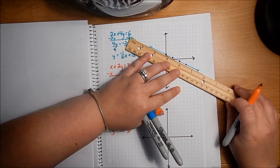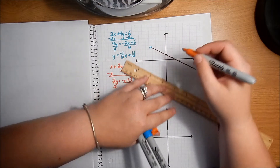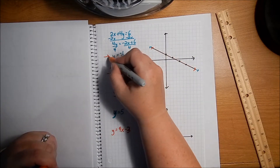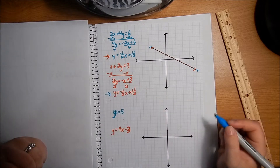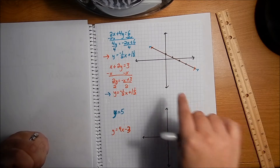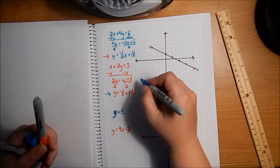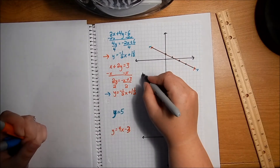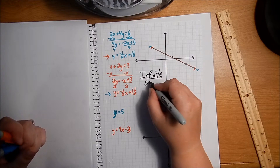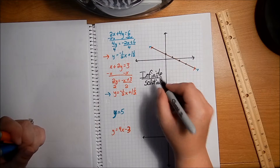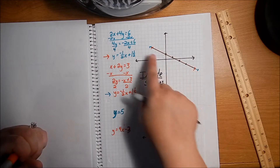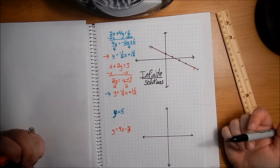As it turns out, they're the exact same line. Of course they are — look at the equations. They're the exact same thing. When this happens, we have infinite solutions. Why? Because every single point on this line is a solution, and since it's one line on top of another and lines go on forever, there are going to be infinite solutions.